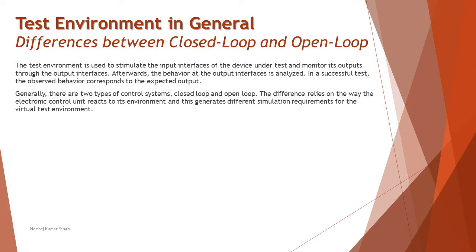As part of the test environment, it is used to stimulate the input interface of the device under test and monitor its output, though output interfaces are also present. Afterwards, the behavior at the output interface is analyzed. In a successful test, the observed behavior corresponds to the expected output. Generally there are two types of control systems: closed loop and open loop. The difference relies on how the ECU reacts to its environment, generating different simulation requirements for the virtual test environment.